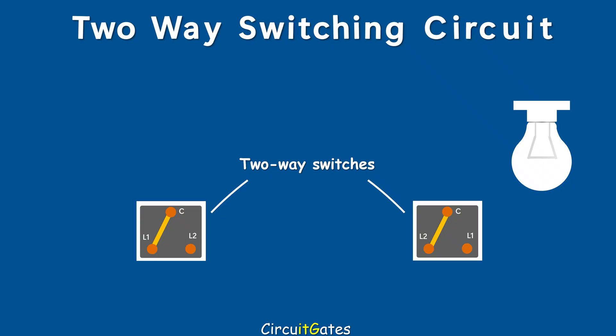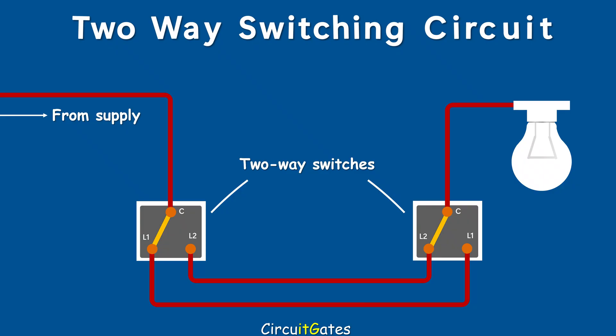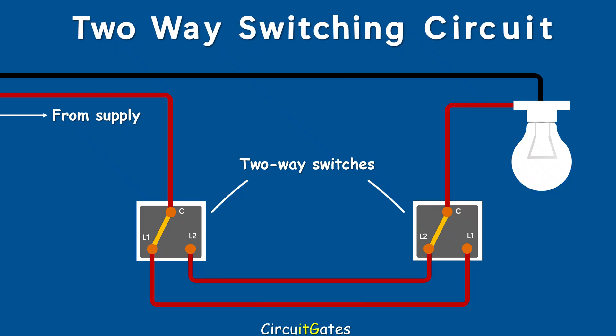To wire the two-way switching circuit, we need two two-way switches. First, connect the live wire from the supply to the common terminal of one switch. Second, connect the live wire going to the lamp to the common terminal of the other switch. Then connect the terminals L1 of the two switches together, and the terminals L2 of the two switches together. The neutral wire from the supply is connected directly to the lamp.